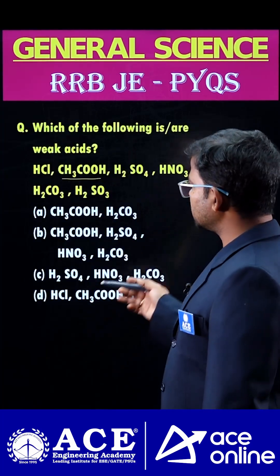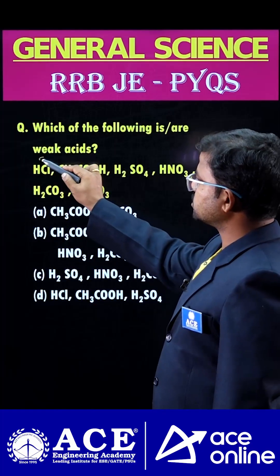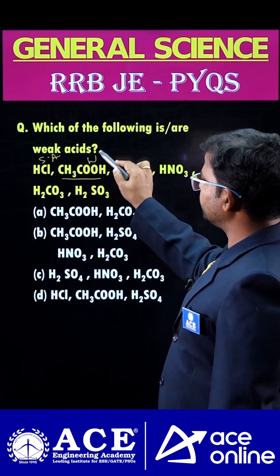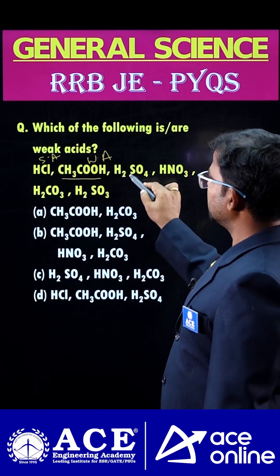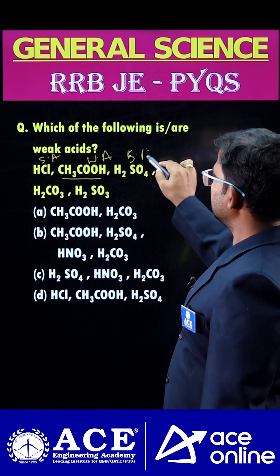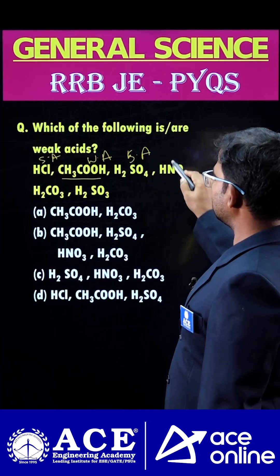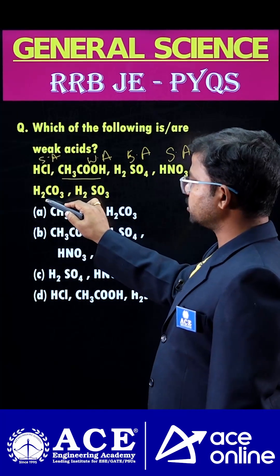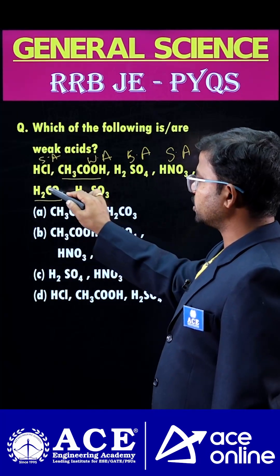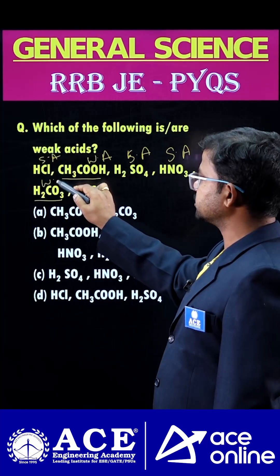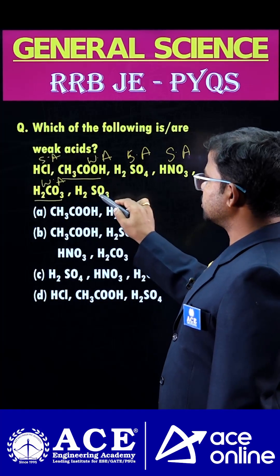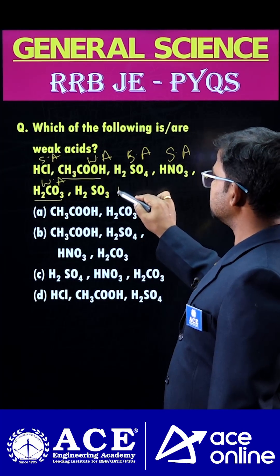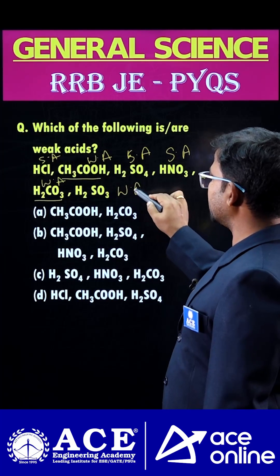Based on that: HCl is a strong acid; acetic acid is a weak acid; H2SO4 is a strong acid; HNO3 is a strong acid; carbonic acid — nothing but soda water — is a weak acid; and H2SO3 (sulfurous acid) is also a weak acid.